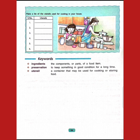The last keyword is utensil — a container that may be used for cooking or storing food. It is a type of tool that is used in the home for cooking various food items. So the meaning of utensil is a container that may be used for cooking or storing food.